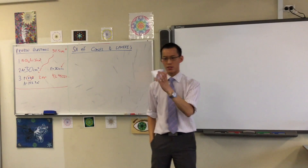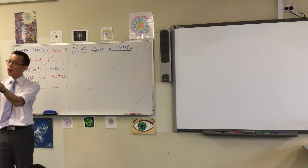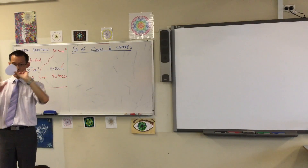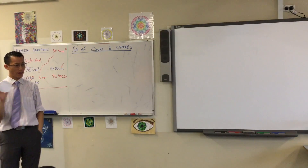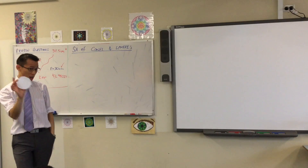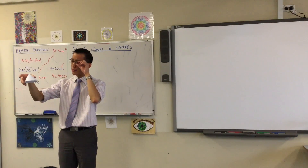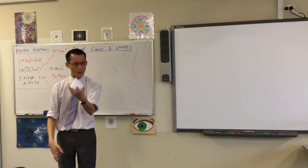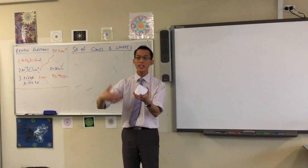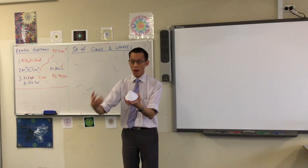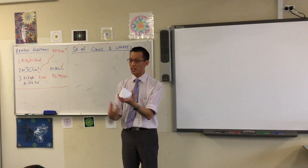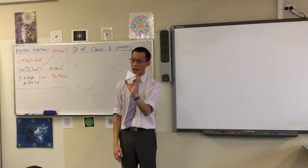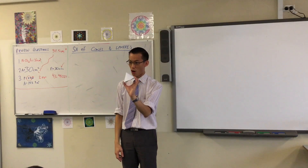We're going to develop the surface area of this cone. Because of the fact that it is round, you could kind of call it a circular pyramid. Because of that, the formula for the surface area is kind of weird. We're going to develop it, but it's going to be so much easier if you don't just look at my cone, but you have one of your own.